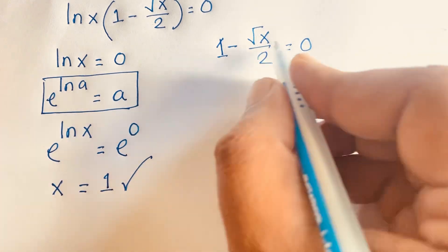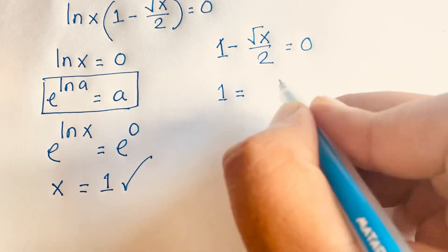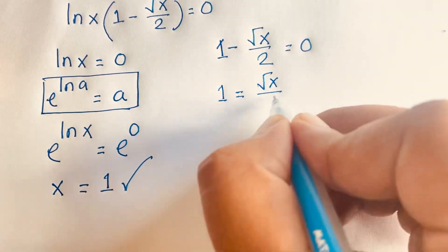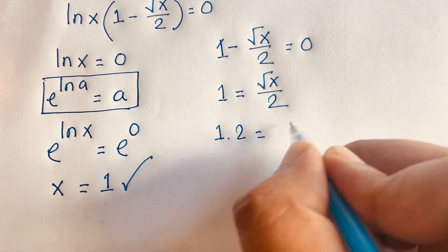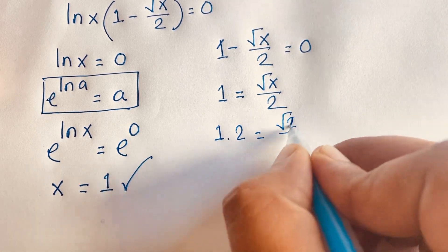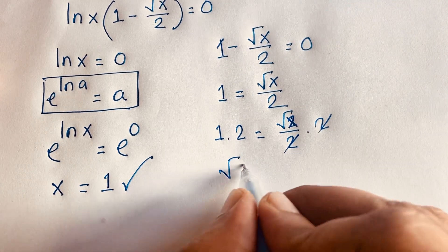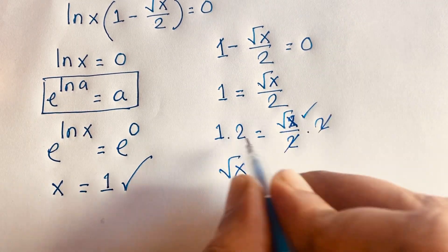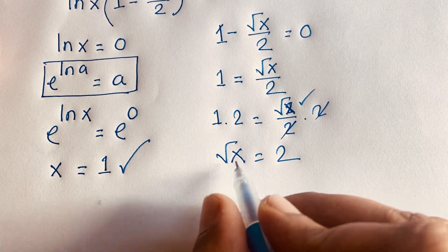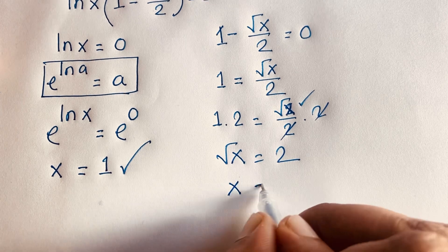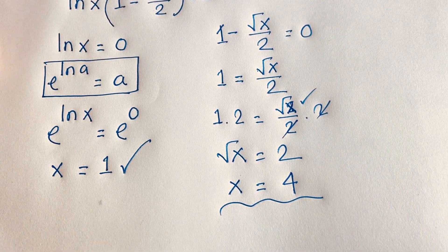For the second case, one minus square root x over two equals zero means square root x over two equals one. Multiplying both sides by two gives square root x equals two. Squaring both sides gives x equals four. So our second answer is x equals four.